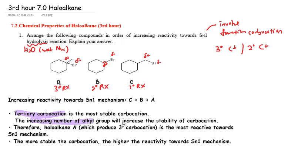The tertiary carbocation is the most stable carbocation because an increasing number of alkyl groups increases the stability of the carbocation. So haloalkane A, which produces a tertiary carbocation, is the most reactive towards SN1 mechanism. We can conclude that the more stable the carbocation, the higher the reactivity towards SN1 mechanism.